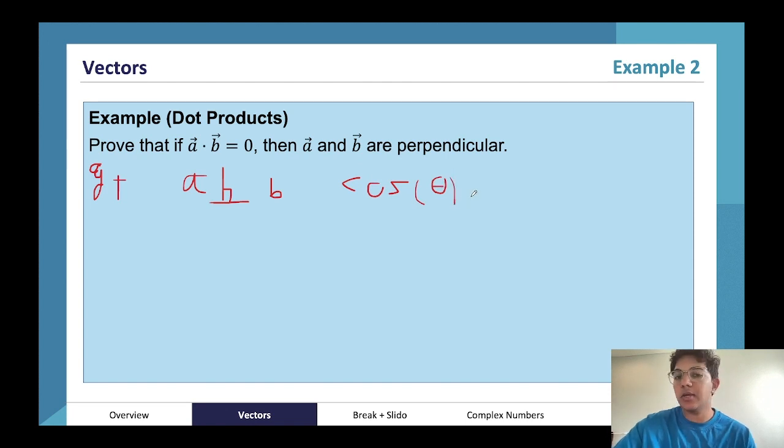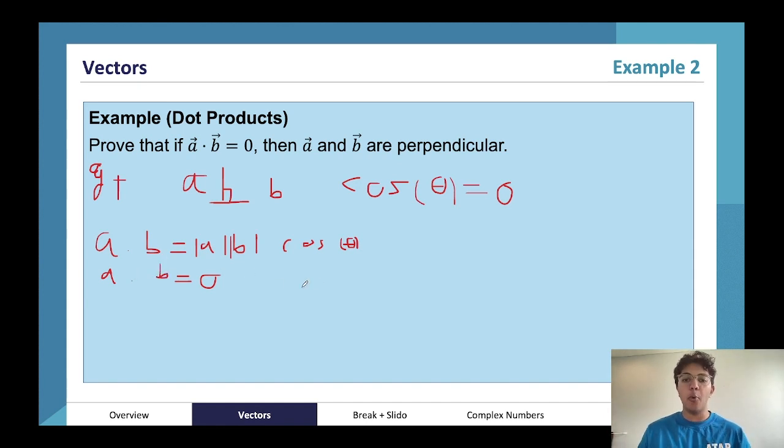I would write that down, saying a statement that theta is the angle between a and b, is zero. a dot b is equal to the magnitude of a times the magnitude of b times cosine theta. And then as cosine theta is zero, a dot b is also zero. Obviously when you write out a proof you want it to be a lot more formal, so instead of just skipping this step here I would say, you know, given that cosine theta is zero as theta is equal to pi over two, a dot b is also equal to zero.